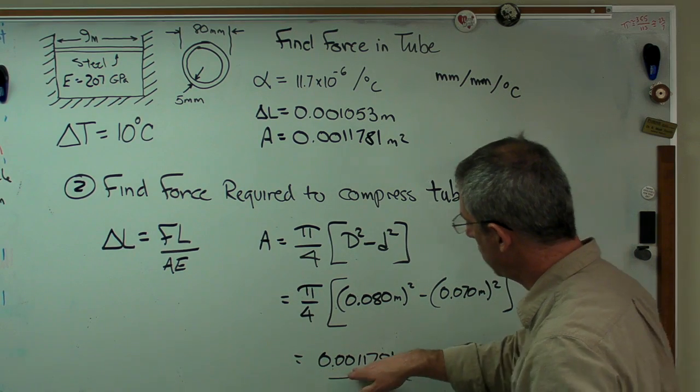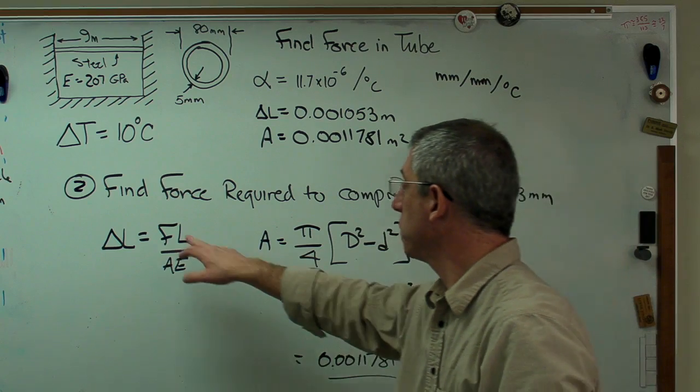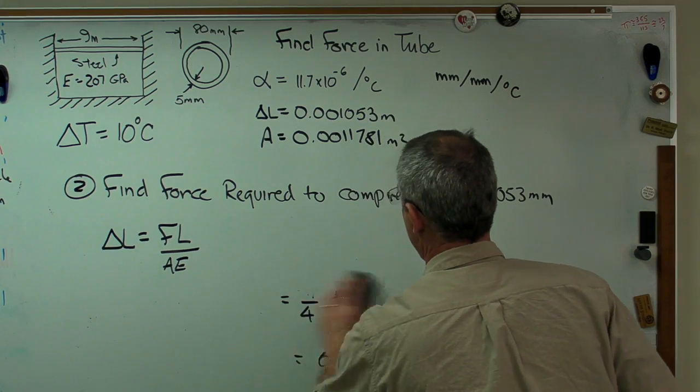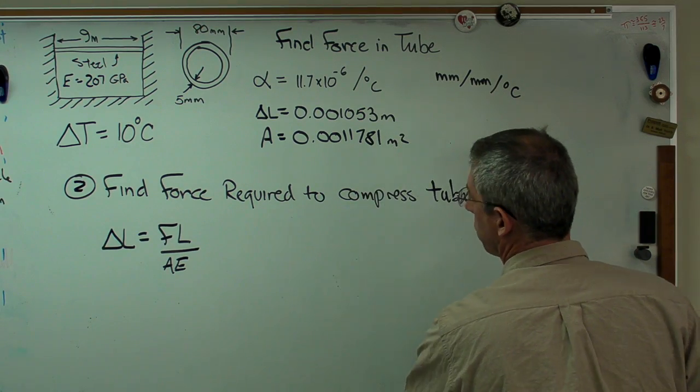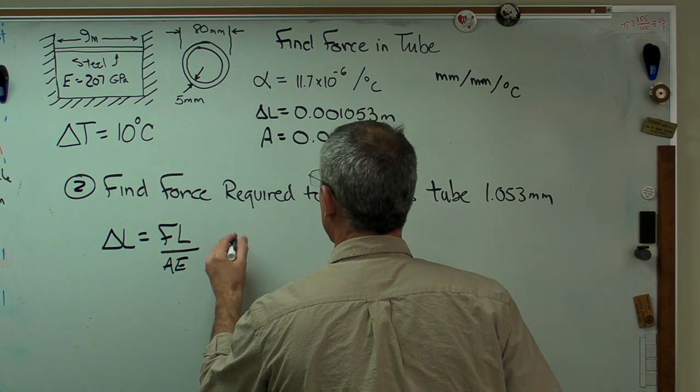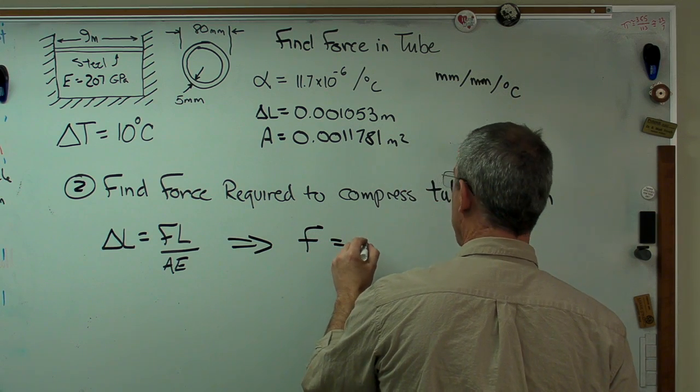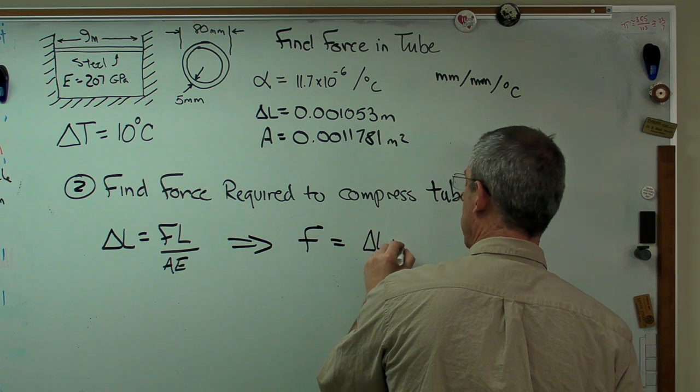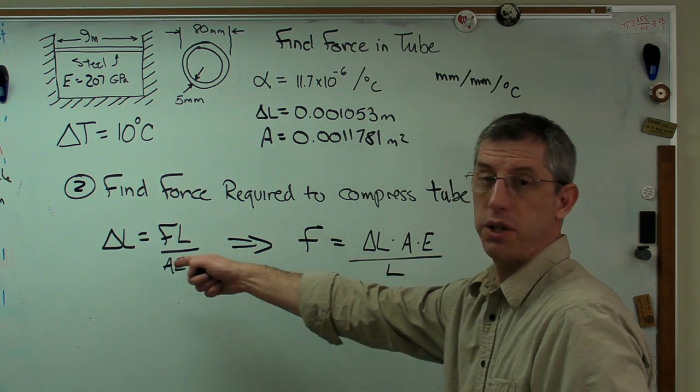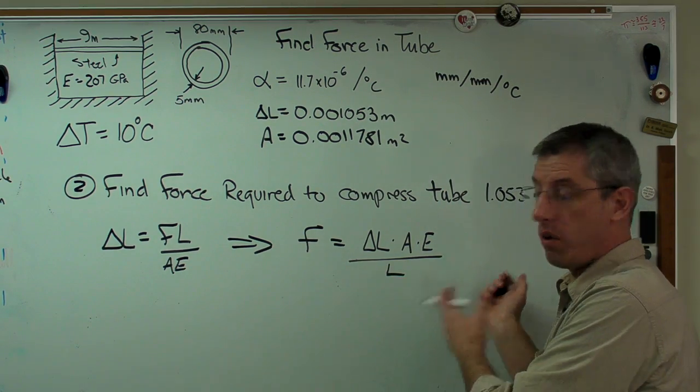So let's go ahead and put this area and everything else in there. But we're also going to have to rearrange this expression a little bit to put F on one side of the equal sign. I don't know F. I do know everything else in that expression. So let's just do a little bit of quick algebra here. And so F is going to be delta L times A times E over L. Same expression. I've just got the thing I don't know on one side of the equal sign and everything I do know on the other.